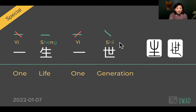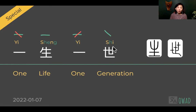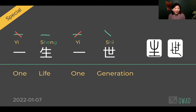And SI: instead of SI, we have the tone curled up by having the H symbol, making it SHI instead of SI. So 1314, YI SHENG YI SHI, becomes YI SHENG YI SHI.